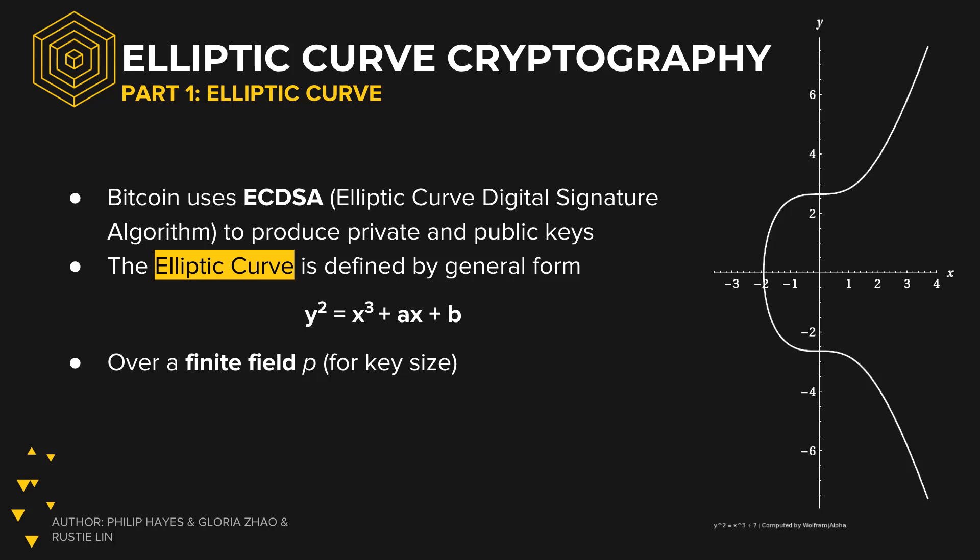Bitcoin uses ECDSA, or Elliptic Curve Digital Signature Algorithm, to produce private keys and public keys. An elliptic curve is just a mathematical curve defined by the general form y squared equals x cubed plus ax plus b. We take everything over a finite field because we want to encode every possible value in a constant amount of space.